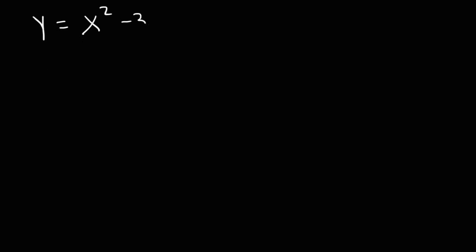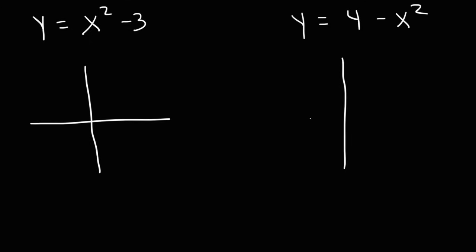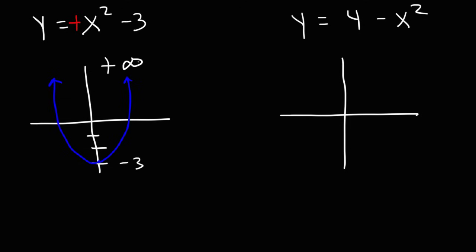Let's try y equals x squared minus 3. I recommend graphing the function. It's shifted down three units but still positive x squared, so it opens upward. The lowest y value is negative 3 and the highest is infinity. Thus the range will be from negative 3 to infinity — it includes negative 3 because if you replace x with 0, y equals negative 3.